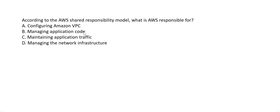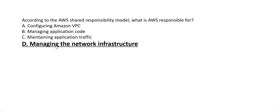According to the AWS shared responsibility model, what is AWS responsible for? Configuring Amazon VPC is the customer's responsibility. Managing application code is the customer's responsibility. Managing application traffic — choosing load balancers, Route 53, and auto scaling groups — is also the customer's decision. However, managing the network infrastructure — routers, wiring, cabling — is entirely AWS's responsibility. Hence option D (managing network infrastructure) is correct.